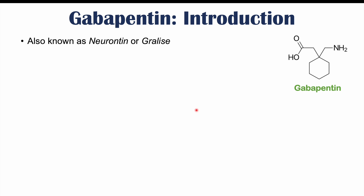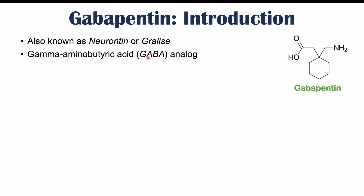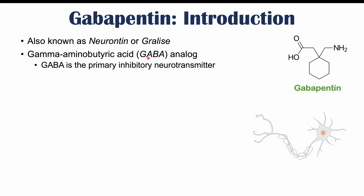Gabapentin is also known as Neurontin or Gralise. It is a gamma-aminobutyric acid, or GABA, analog. GABA is a neurotransmitter — it's actually the classic inhibitory neurotransmitter — and this is where we get the name gabapentin from. It is a GABA analog, meaning that it acts like GABA, that primary inhibitory neurotransmitter.